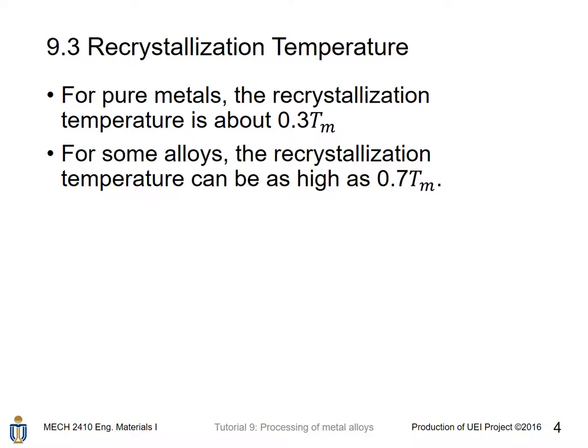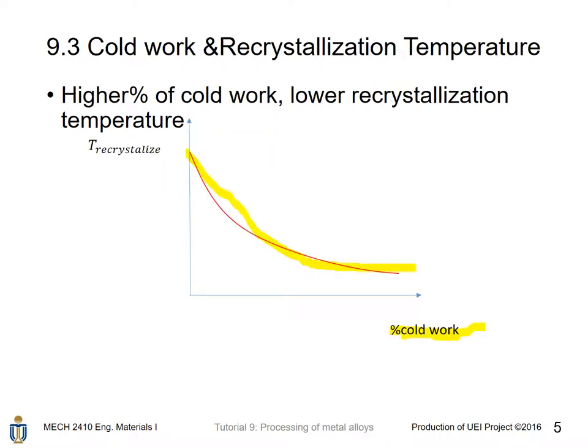For pure metals, the recrystallization temperature is about 0.3 times the melting temperature of that metal. But for some alloys, the recrystallization temperature can be as high as 0.7 times the melting temperature. For a higher percentage of cold work, the metal will have a generally lower recrystallization temperature, as shown in the graph.